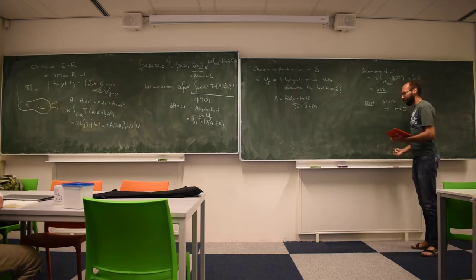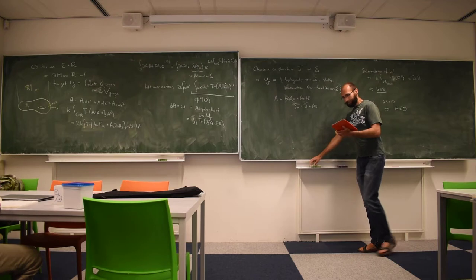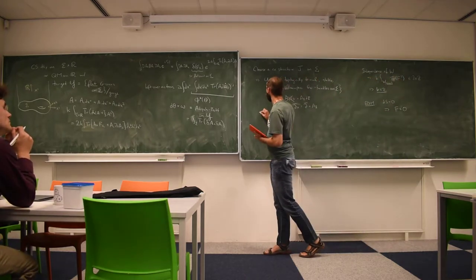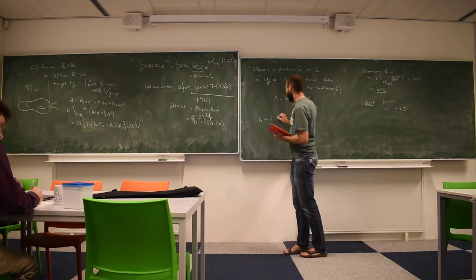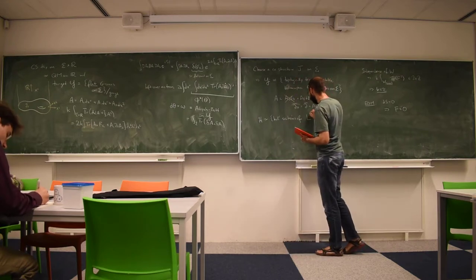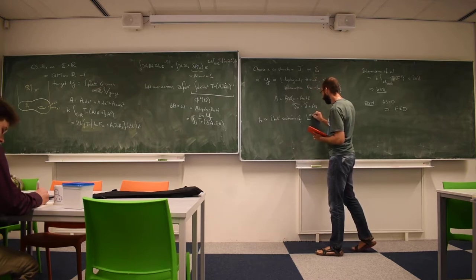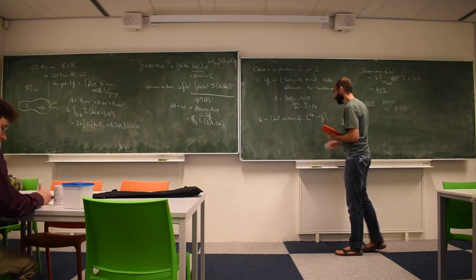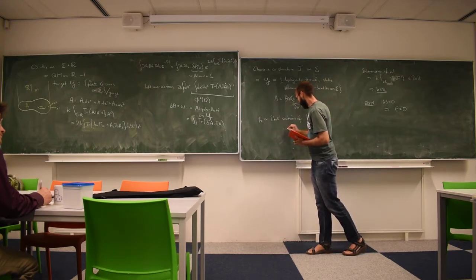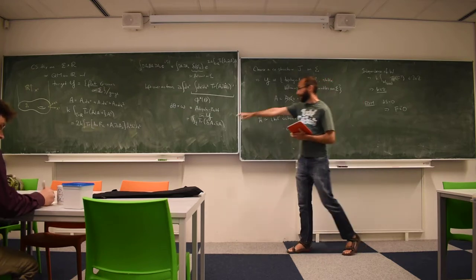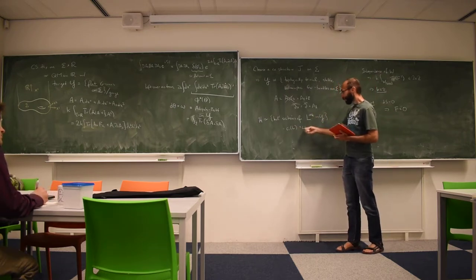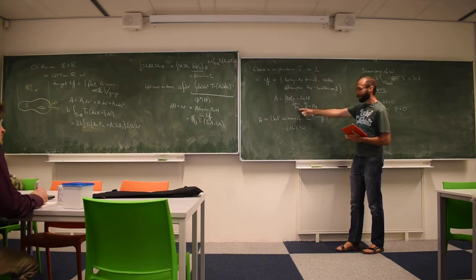Another wonderful thing that Witten realized in his paper on this long ago is that this is actually a determinant line bundle for the del bar operator. So the Hilbert space is holomorphic sections of the kth power of some line bundle on Y, where L is such that its first Chern class is this Atiyah-Bott form, and the bundle whose first Chern class addresses the Atiyah-Bott form is precisely the determinant line bundle of the del bar operator.